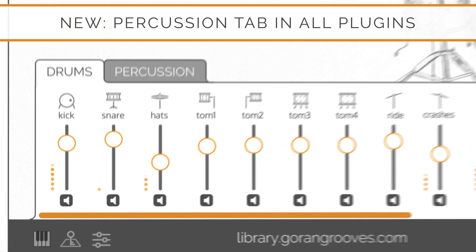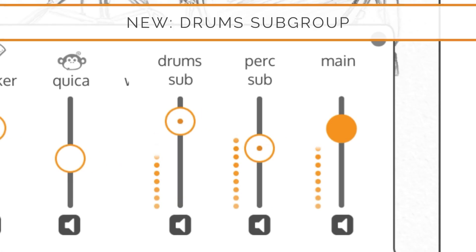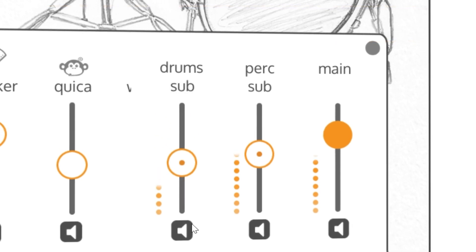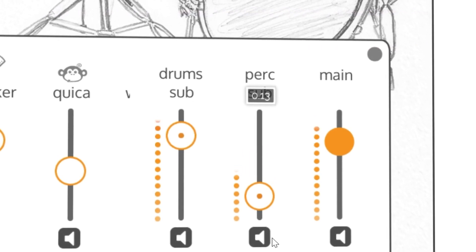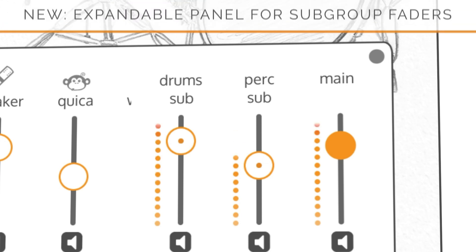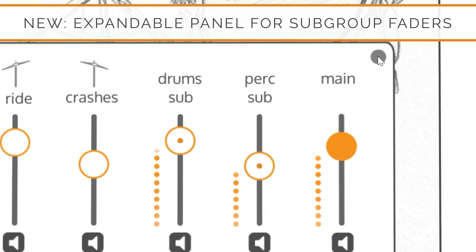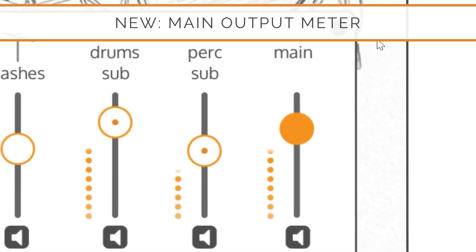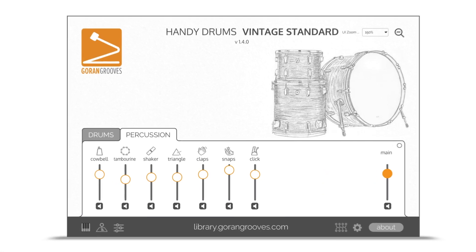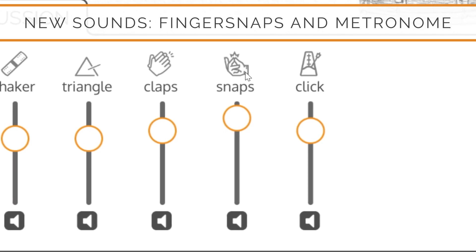All Handy Drums plugins now feature a dedicated percussion tab and a drum tab to give you more control. Balancing drums versus percussion is now easier thanks to the drums subgroup through which all drum set components are routed. The drums subgroup contains a level meter visible whenever an audio signal is present. The drums and percussion subgroup faders and meters are tucked away by default and are easily accessible by clicking on the circular button to the right of the main fader. The main fader now has a signal level meter, and we added a couple of handy percussion sounds — finger snaps and a metronome.